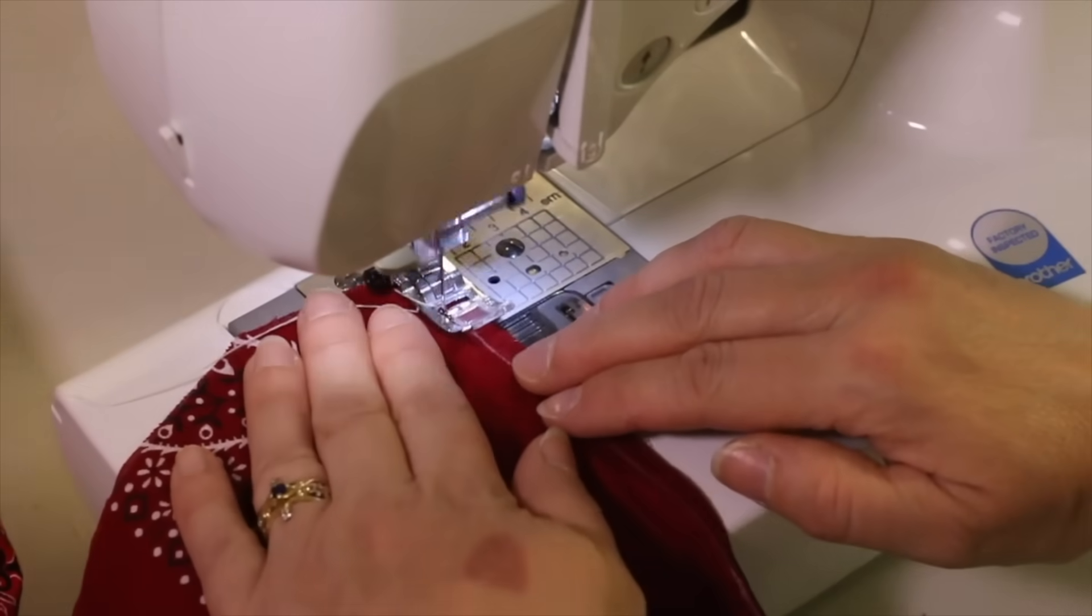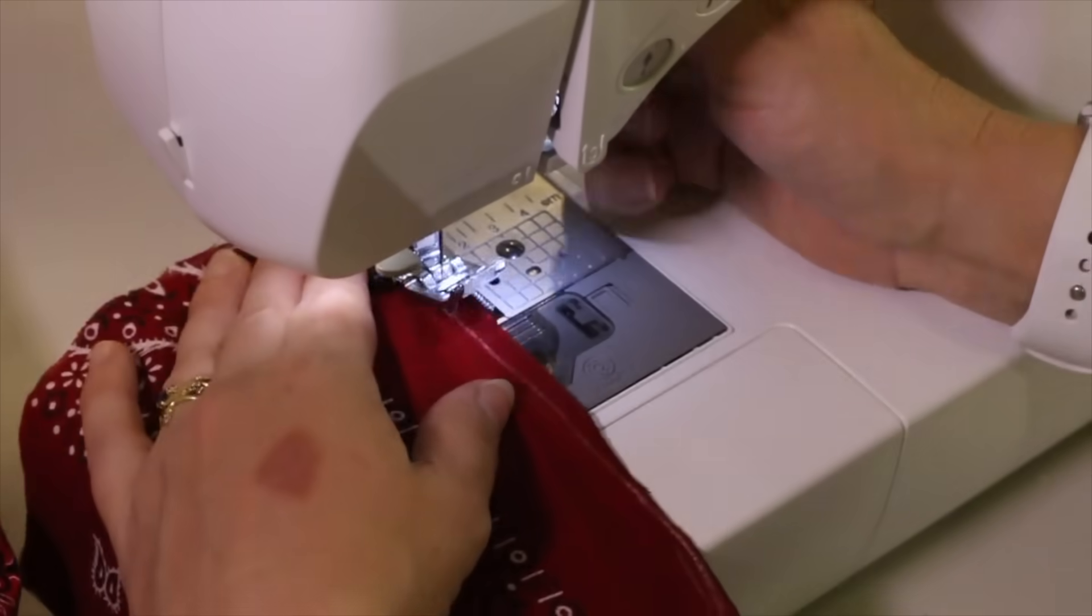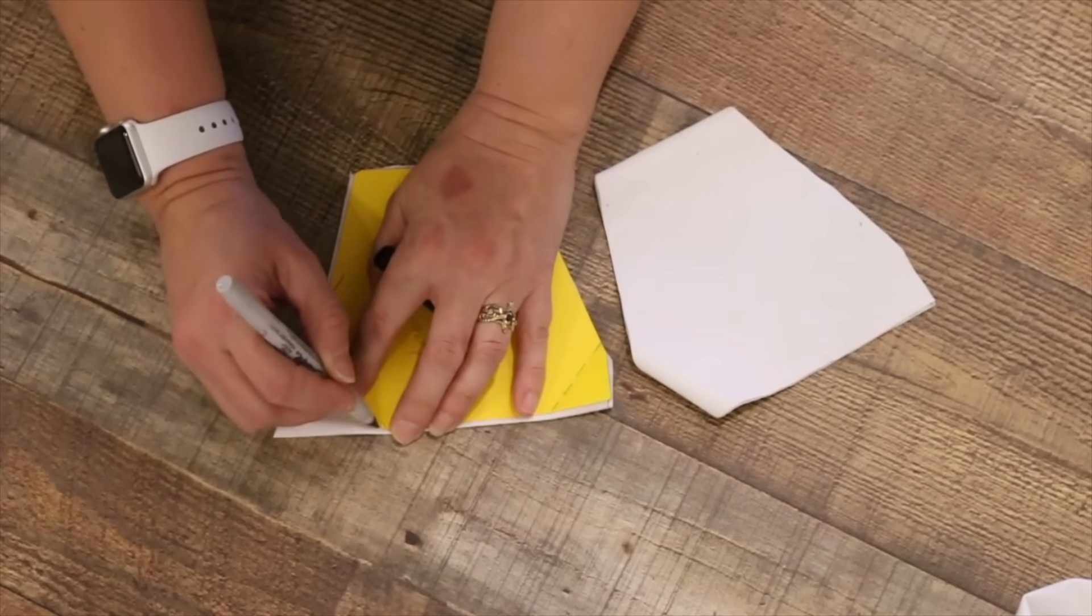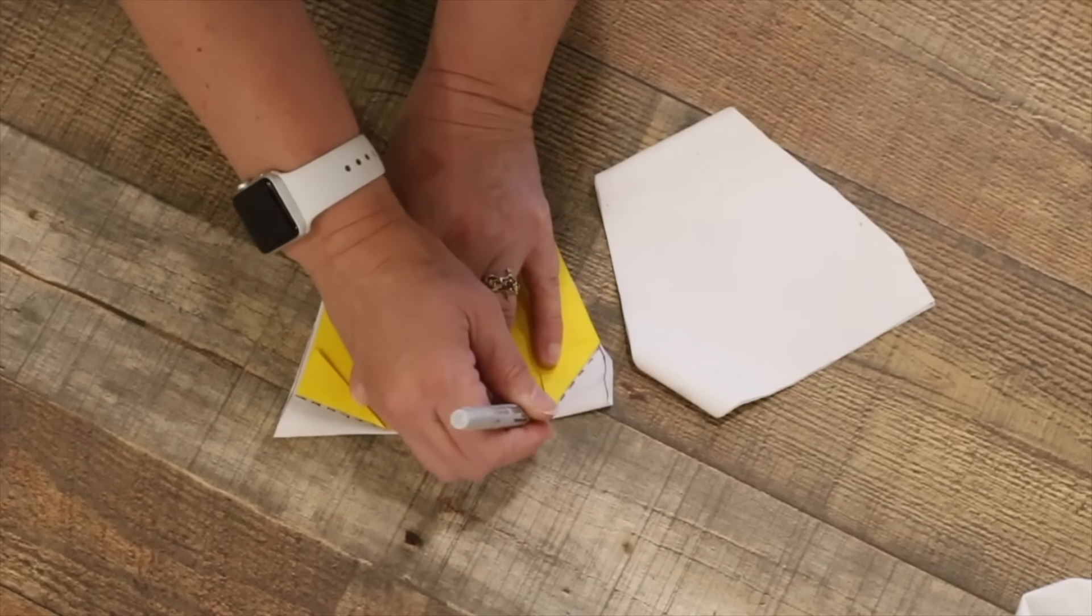If you need to connect the two pieces of fabric together on the long side, do that now, making sure the right sides are together. Fold the corners of your template and mark a line onto your fabric. Repeat this on all pieces you have cut out.